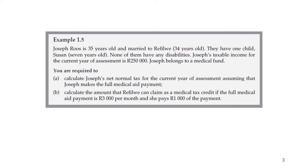Example 1.5 in your student's approach to natural persons gives us Joseph, who is 35, and Refuliwe, who is 34. They have one child and none of them have any disabilities. Joseph's taxable income for the current year of assessment is R250,000 and he belongs to a medical aid. The question asks for Joseph's net normal tax for the current year of assessment, assuming the full medical aid payment is R3,000 per month.